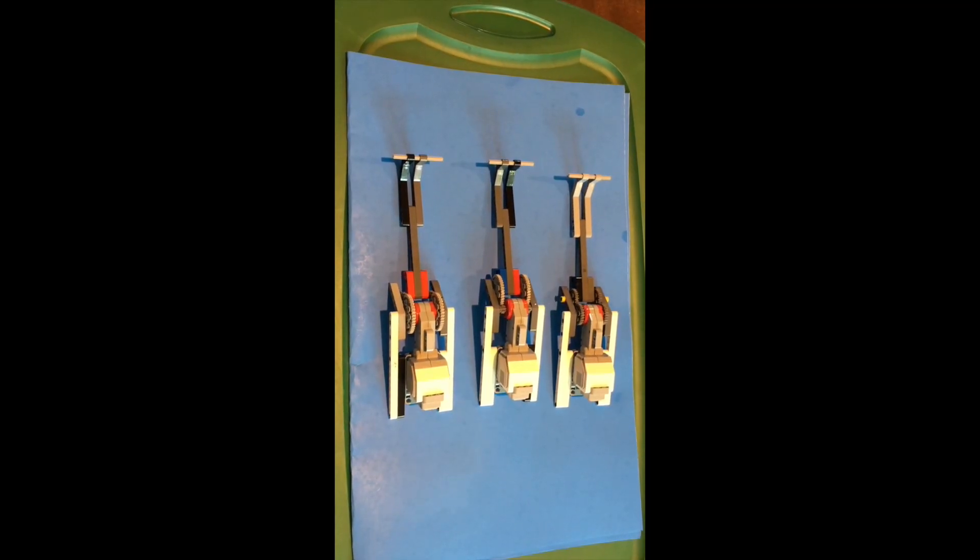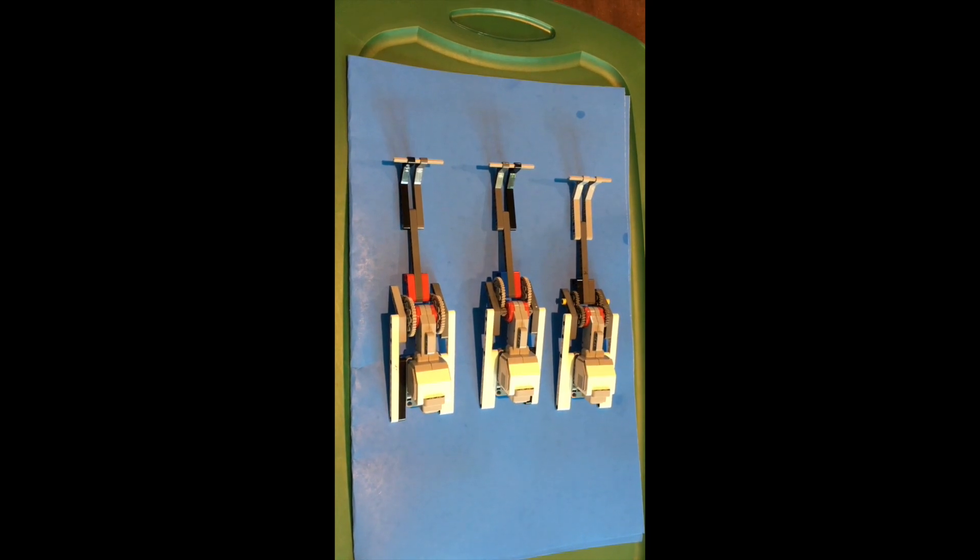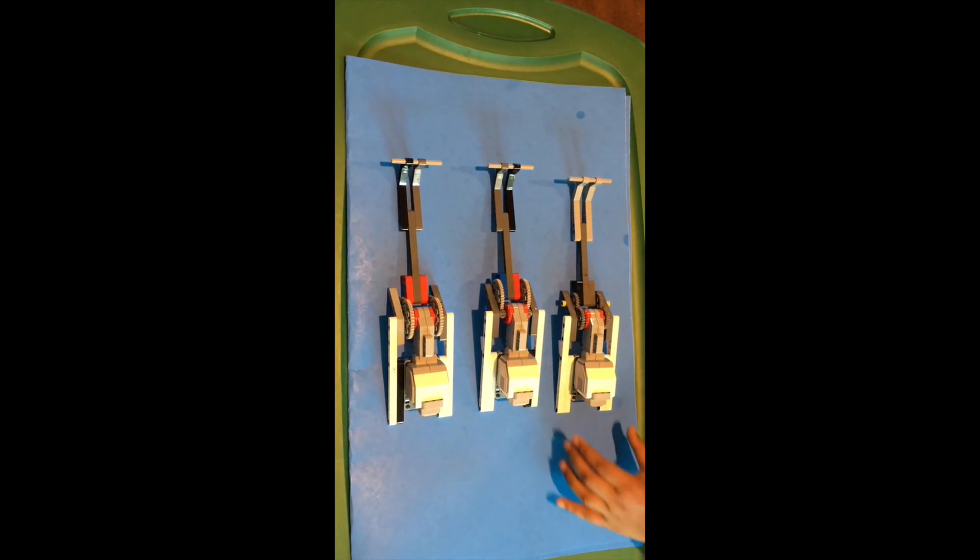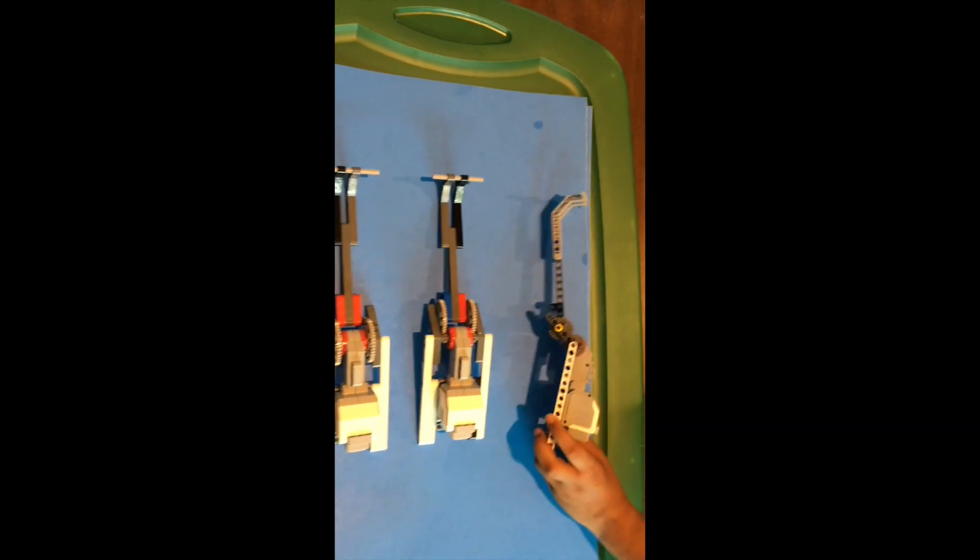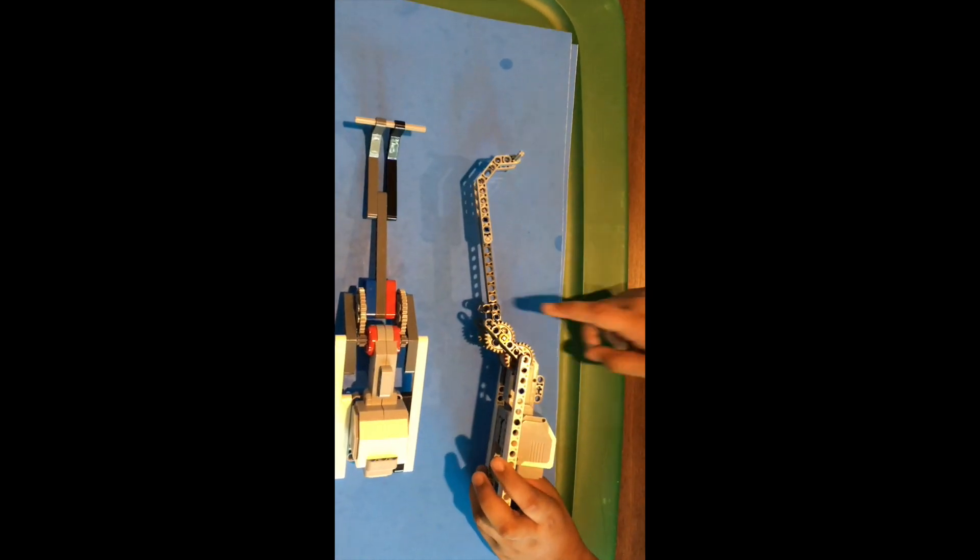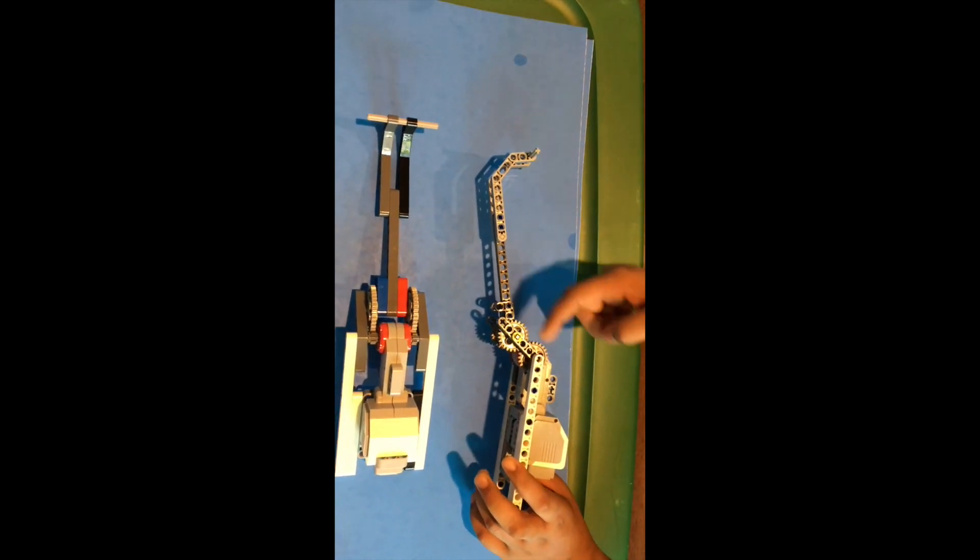This is how to make the models for the gear ratio demo. All three of these models are very similar to each other. To make the one with the gear ratio of 1, you will need two 24 teeth gears that you will connect four spaces apart.